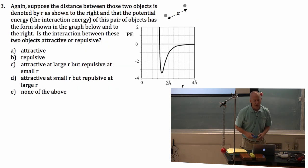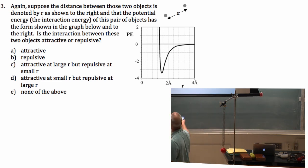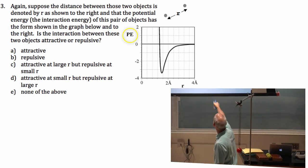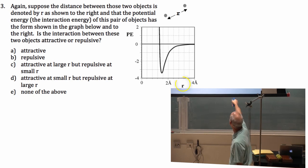Suppose the distance between these two objects is shown by r as shown to the right. Potential energy—in other words, the interaction energy of this pair of objects. Okay, so now we're going to give it a complicated shape. Here's the potential energy. Here's the distance between the two objects. Here's r. Here's r equals zero.